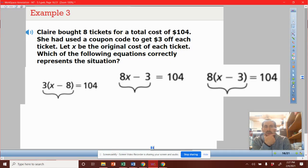Example three. Claire bought eight tickets for a total cost of $104. She had used a coupon code to get $3 off each ticket. Let x be the original cost of each ticket.